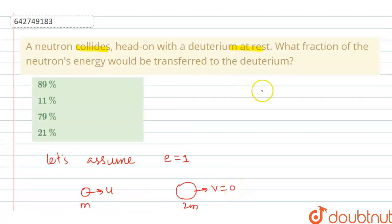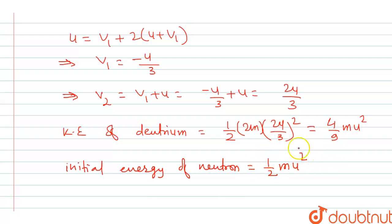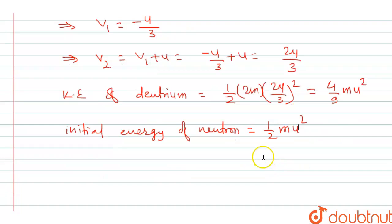And what is being asked, what fraction of the neutron's energy would be transferred to the deuterium? So what fraction is transferred? Initial energy of neutron is half mu squared.